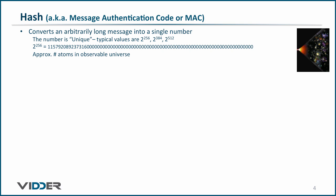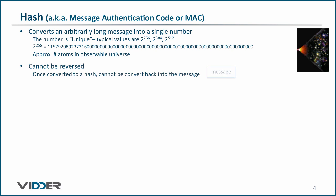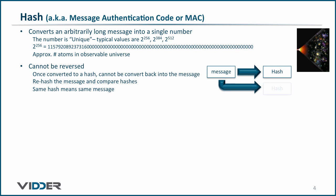In fact, it's approximately equal to the number of atoms in the observable universe. Another thing to know about a hash is that it cannot be reversed. Once you hash a message, you cannot convert the hash back to your message. Therefore, to check the integrity of a message, one rehashes the original message and then compares the two hash values. If they are the same, then the message has not been altered.